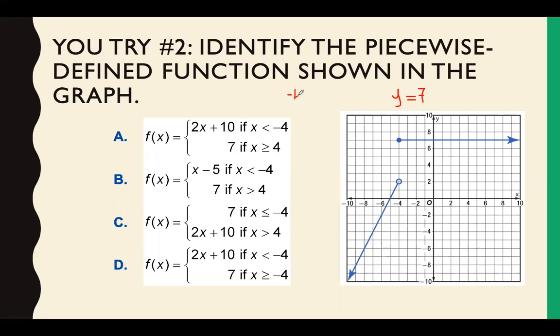And that starts at negative 4 for x, and x is greater than that. And it does have a closed circle, so x is equal to that. So when x is greater than or equal to negative 4, it is 7. We're going to cross out B because it doesn't have the equal to symbol. C doesn't work because it switched them. So now we need to go ahead and take a look at this here. And it's going to be 2x plus 10.